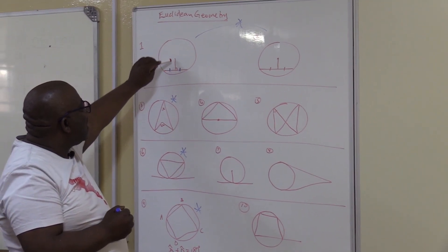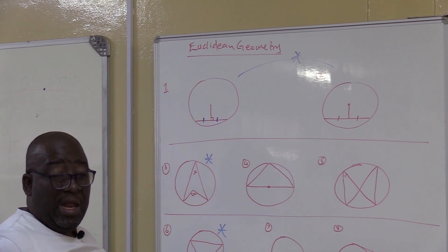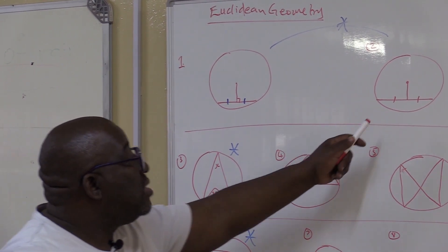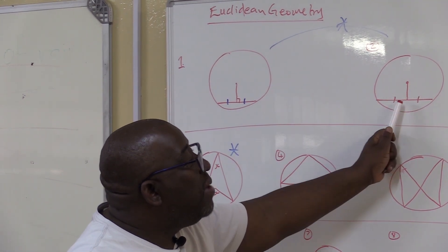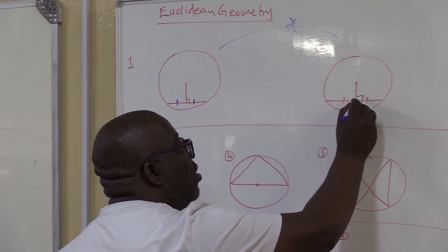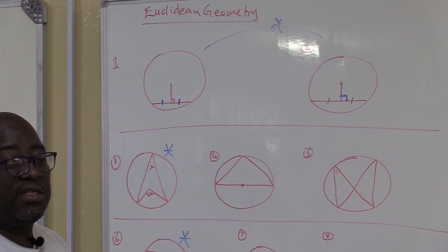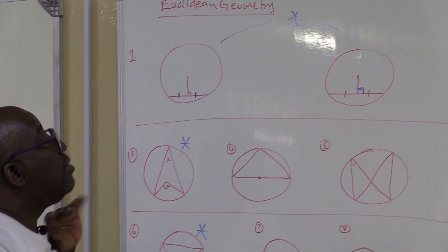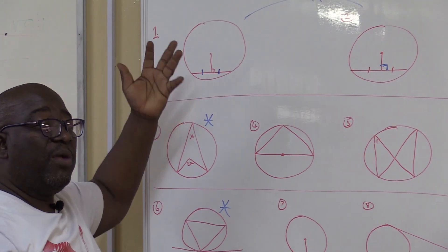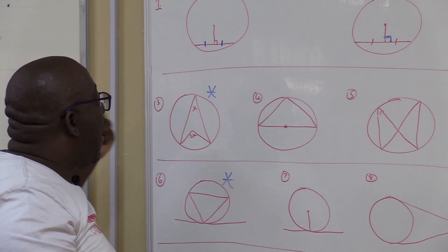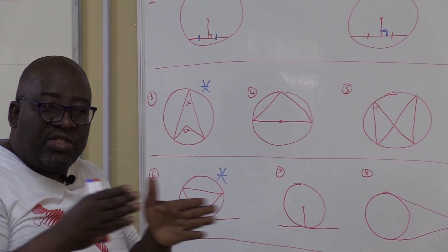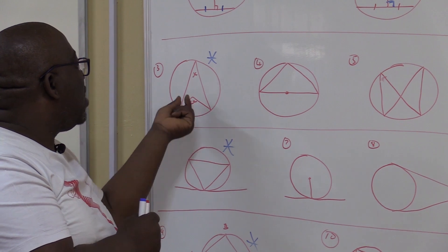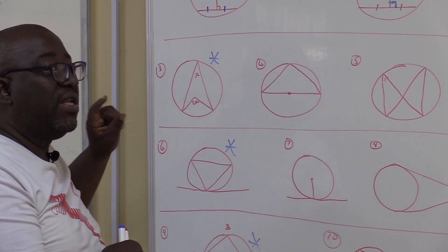A line drawn from the center of a circle perpendicular to a chord bisects the chord. It's also examinable because we can be asked to complete the theorem. A line drawn from the center to the midpoint of a chord is perpendicular to that chord. When you want to prove these two theorems, you use congruency from Grade 9. The next set — these three theorems all have something to do with the center. The angle subtended by an arc or chord at the center is twice the angle subtended by that same arc or chord at the circumference. We refer to this as the center theorem.